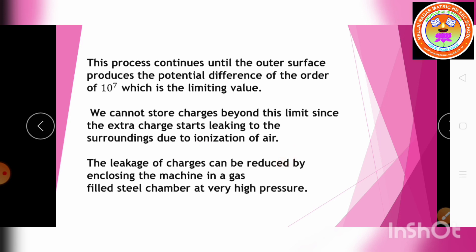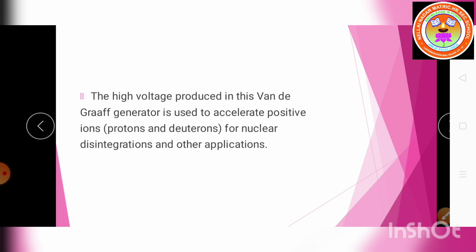To reduce the leakage of charges, the machine is enclosed in a gas-filled steel chamber at very high pressure. This high voltage produced by the Van de Graaff generator is used to accelerate positive ions such as protons and deuterons for nuclear disintegration and other applications.